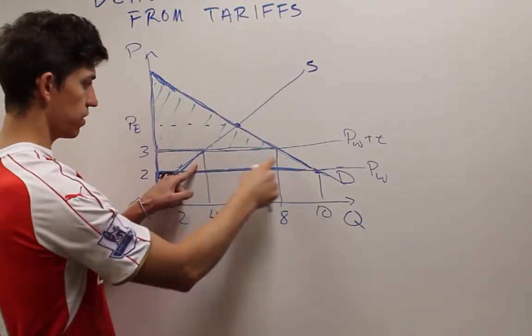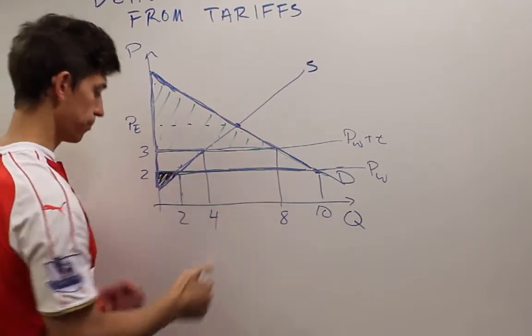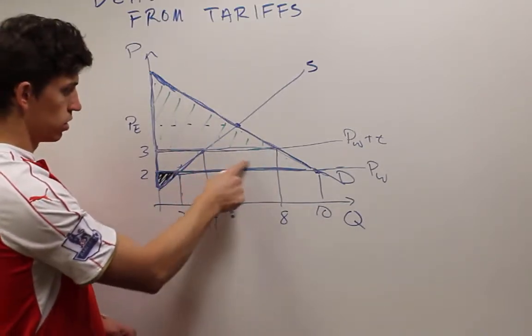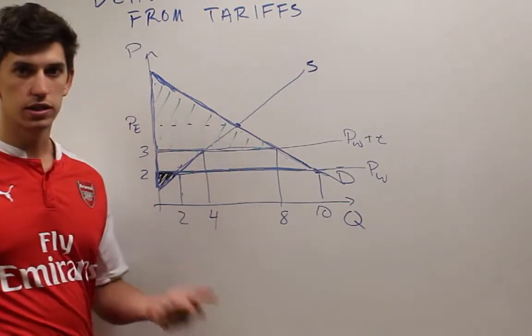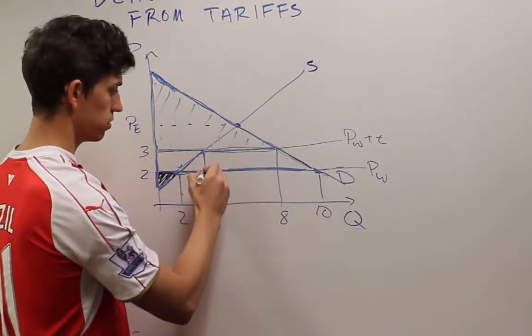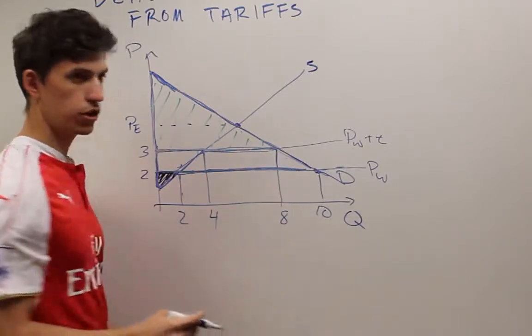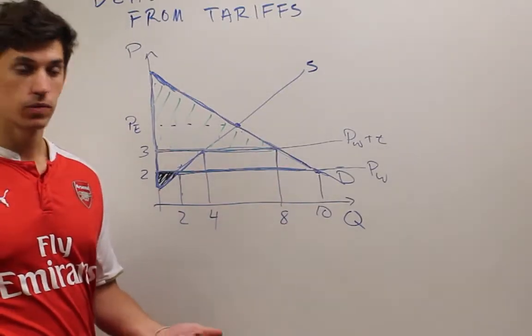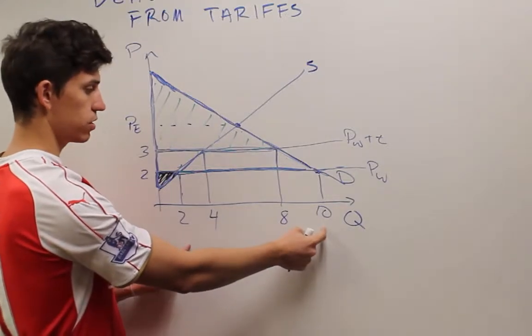Now what we have left are these three triangles here. The first one, the middle, this doesn't actually contribute to the deadweight loss. Because this middle box here is actually the revenue that's raised from the tariff. Remember, previously we imported 8, the 10 minus 2. Now we import 4, 8 minus 4.